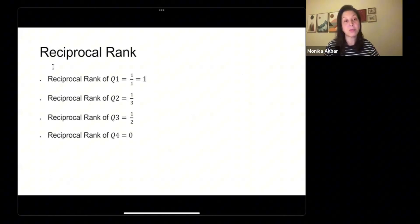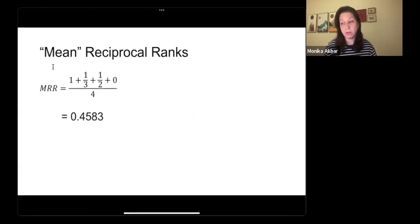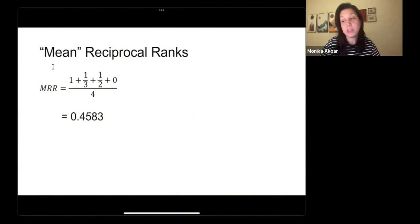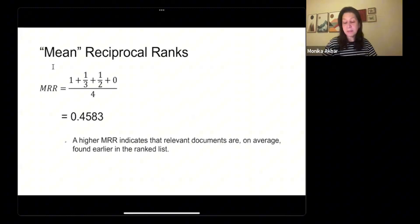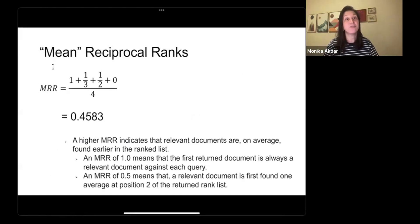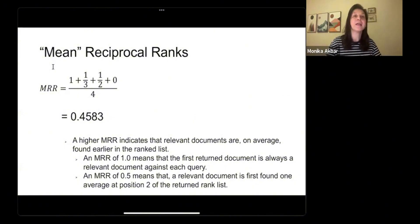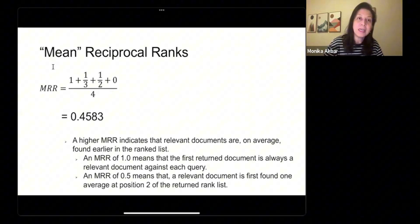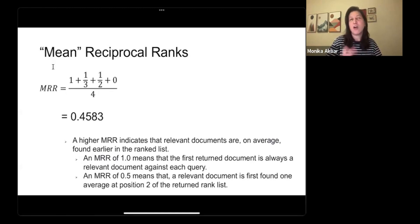Taking the average of all four reciprocal ranks — 1, 1/3, 1/2, and 0 — divided by 4 (the number of queries), we get a mean reciprocal rank of 0.4583. A higher mean reciprocal rank indicates that relevant documents are on average found earlier in the ranked list. A mean reciprocal rank of 1 means the first returned document is always relevant. A value of 0.5 means a relevant document is found on average at position 2.